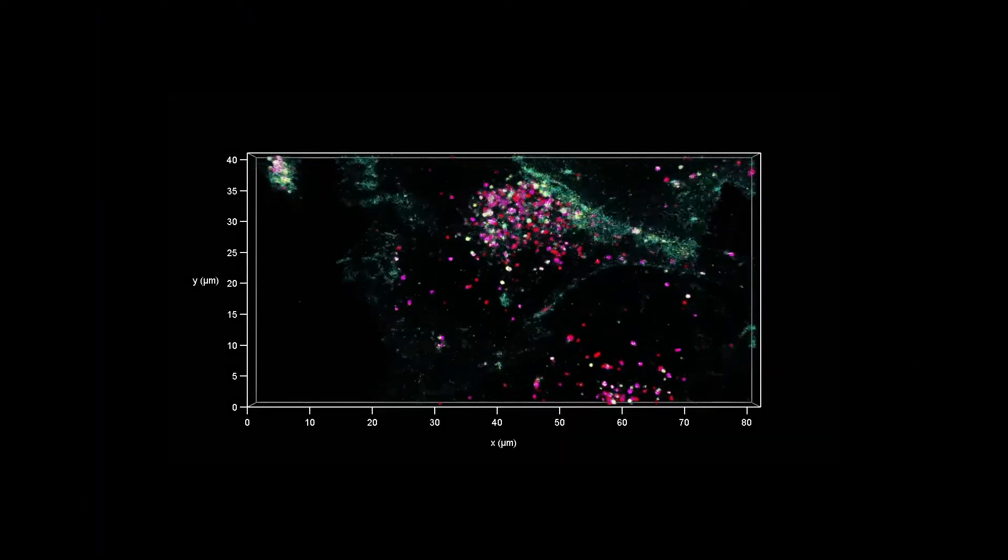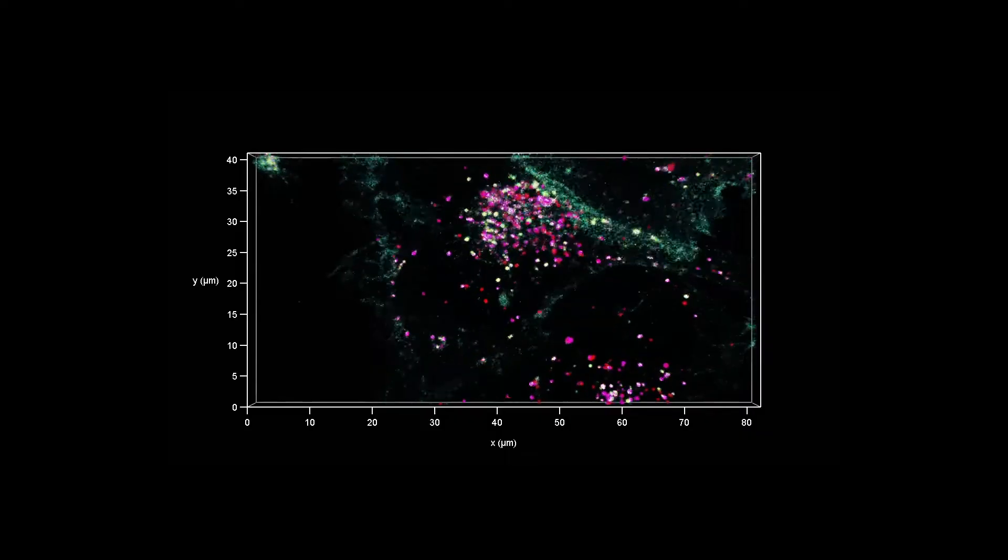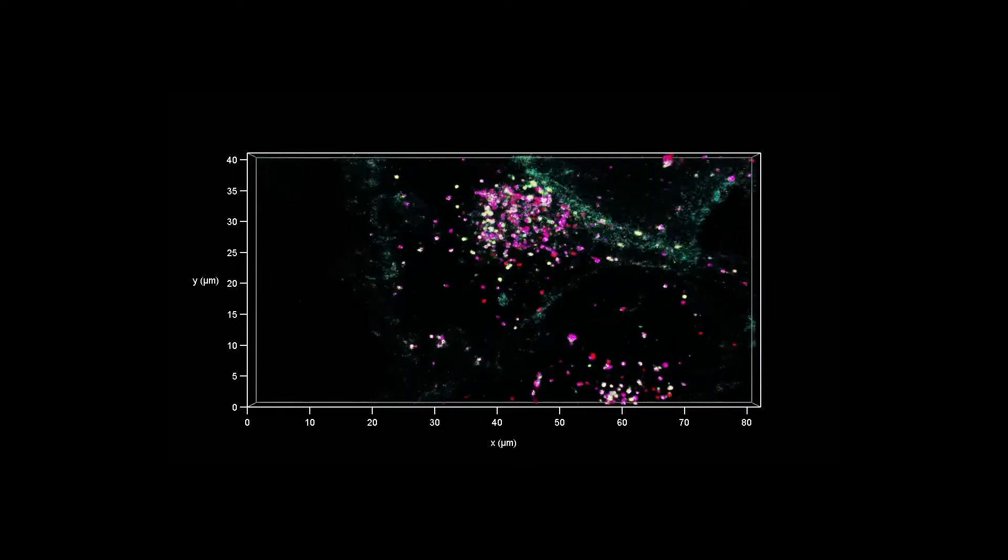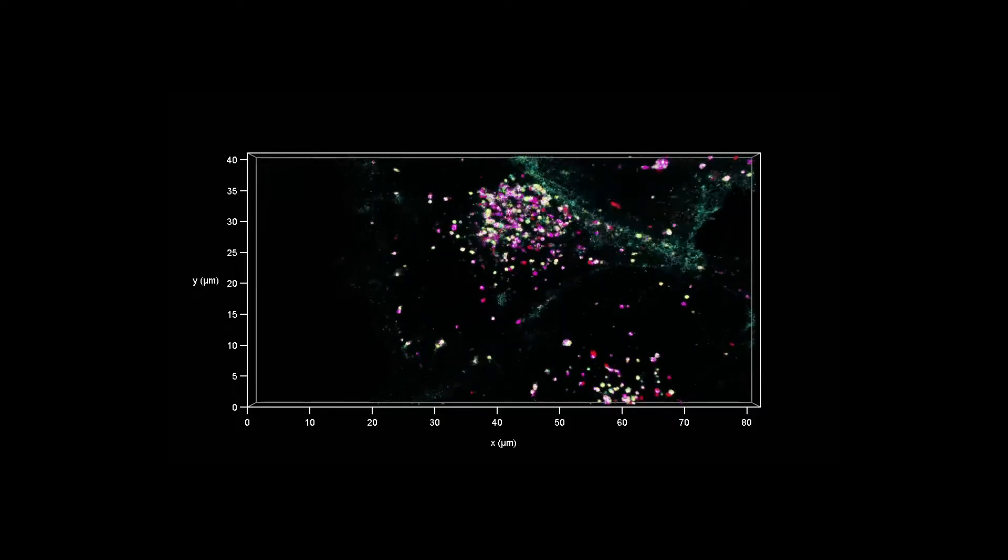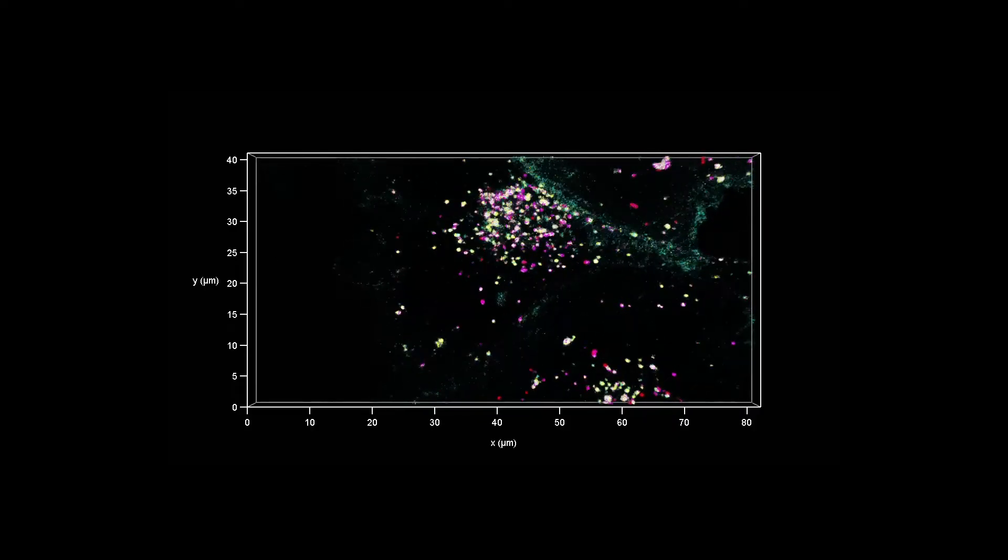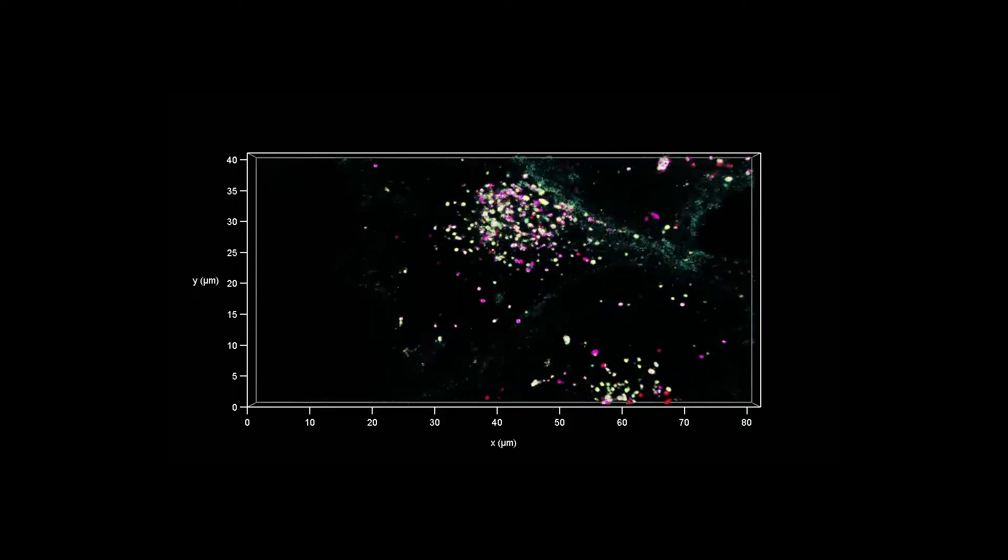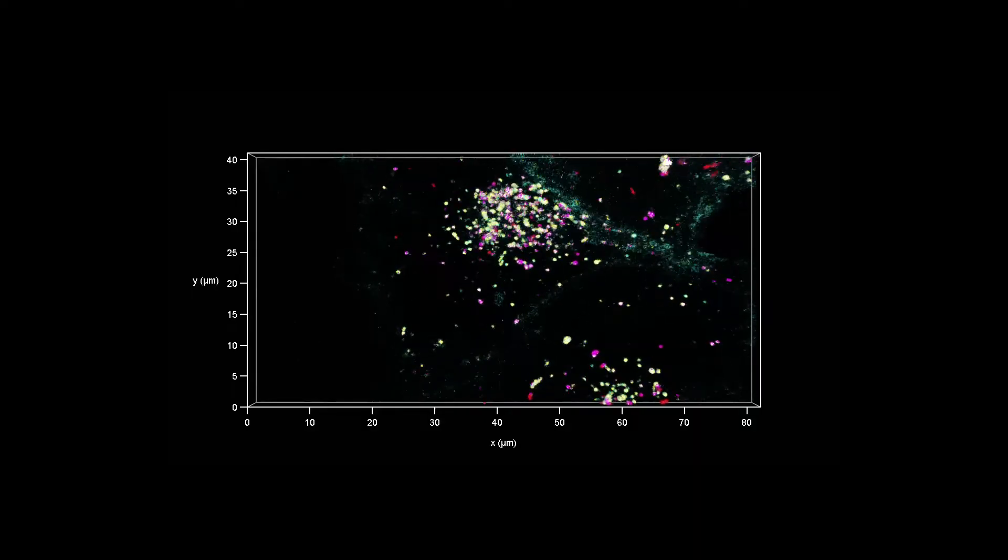To show you this, we will use vesicle trafficking as an example. With TauSense, you're able to image the functional states of endosome maturation in this cell. But how is this possible? How can the live cellular processes be read from a single channel?